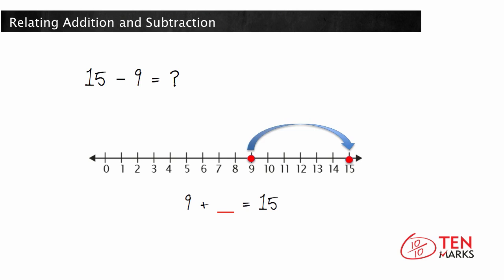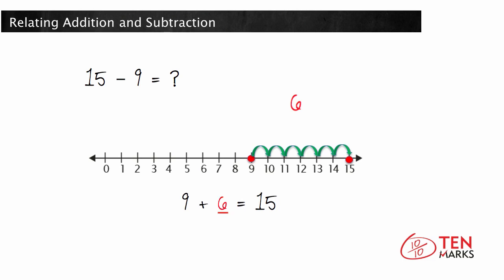Count on the number line to find the difference: 10, 11, 12, 13, 14, 15. You counted 6 times, so 9 plus 6 equals 15. Therefore, 15 take away 9 equals 6.